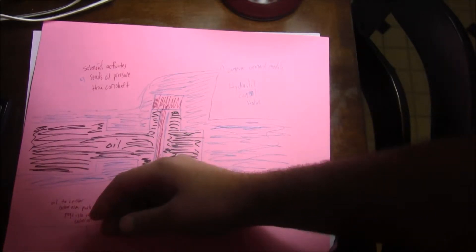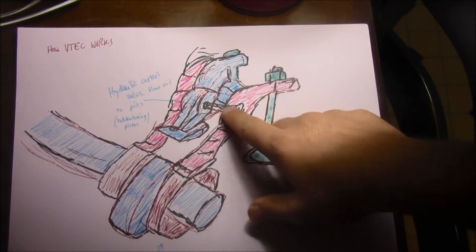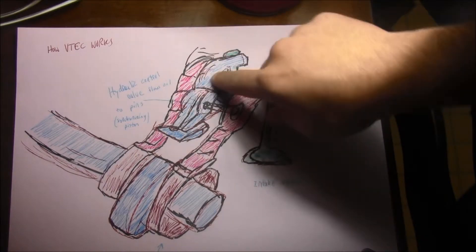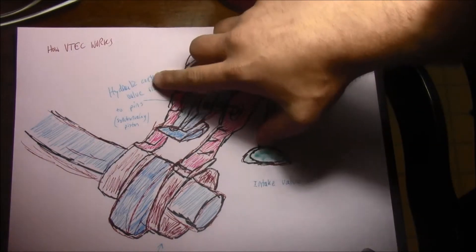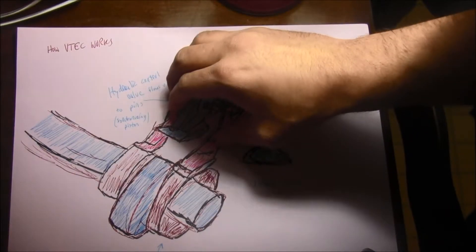This peg right here moves over. Pressurized oil goes in the middle, and the middle rocker arm pushes out a peg. The peg comes out into the other rocker arms, which synchronizes your three rocker arms together.